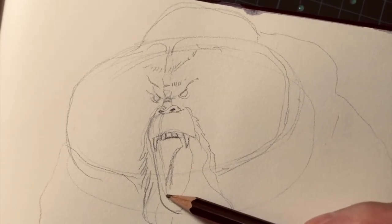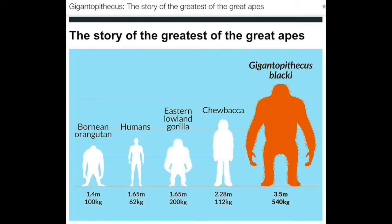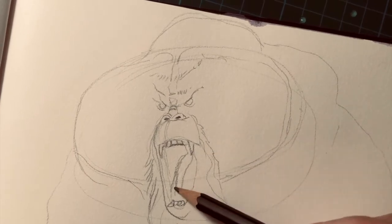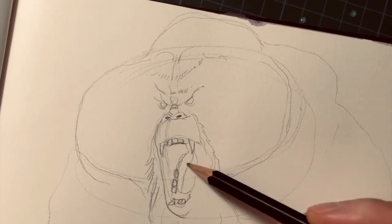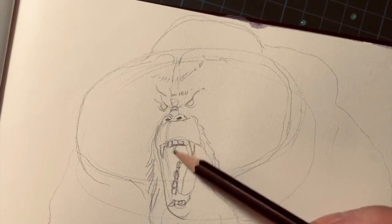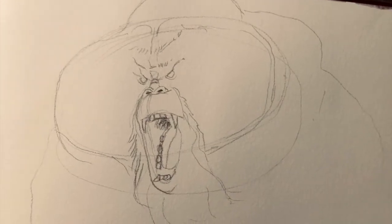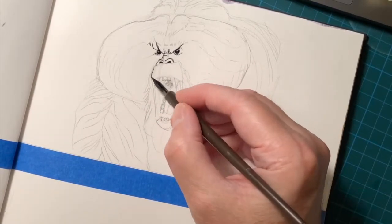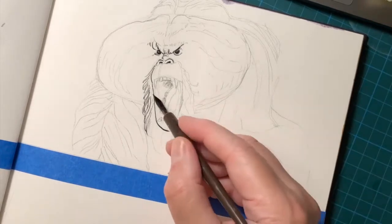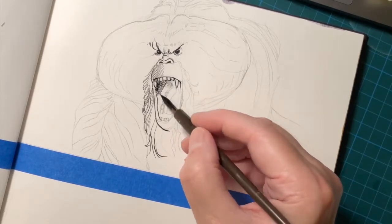We don't know exactly what Gigantopithecus looked like because we only have parts of the jaw and teeth, but we can reasonably assume it had some qualities of contemporary orangutans. It was obviously massive. It lived during the time of our hominid cousins and possibly survived up to around 300,000 years ago, meaning it may have had contact with Homo erectus in Asia. It probably originated two million years ago and, despite its horrifying appearance in this drawing, it was a herbivore, likely eating similarly to today's pandas.